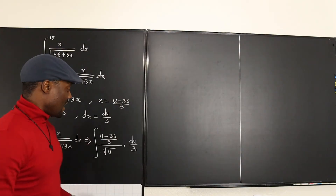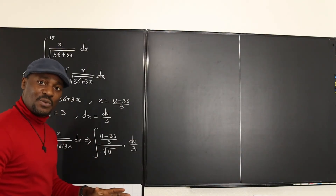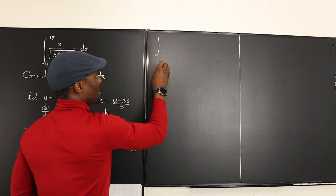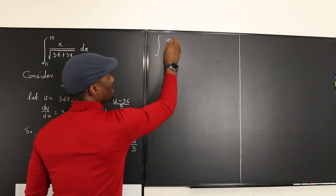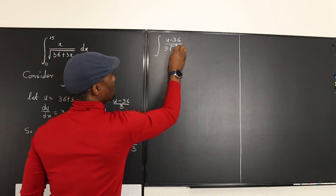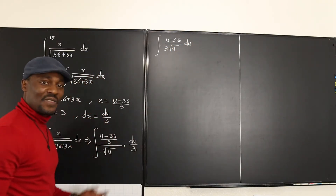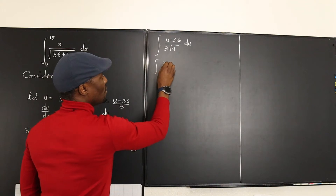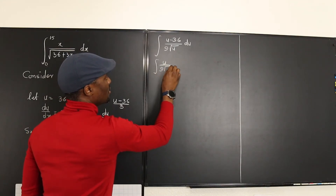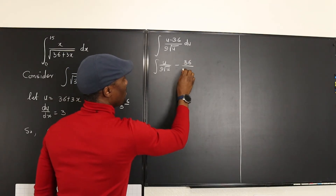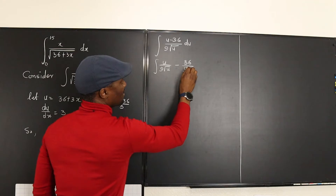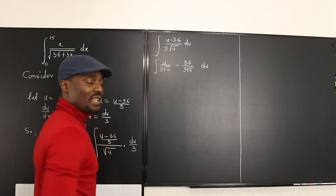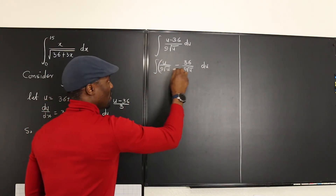Rearranging, the two 3s in the denominator multiply together to give 9, so we have the integral of (u minus 36) over 9 times square root of u, du. This looks much cleaner. We can now split this into two separate integrals: u over 9√u minus 36 over 9√u, all times du.